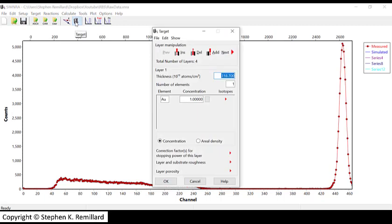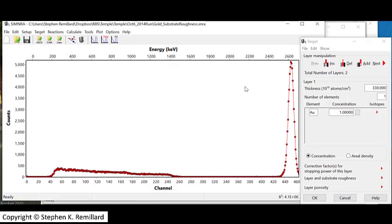The next icon sets up the sample. It's this layering tool, and since it's a thin film sample, I'll have two layers. Layer one is the gold film, which has a concentration of 100%, and layer two is the MgO substrate, which should have a concentration of 50% Mg and 50% oxygen.